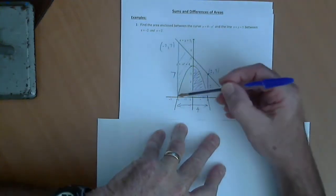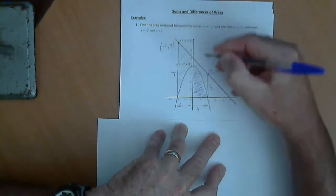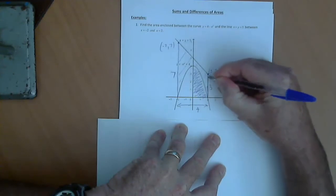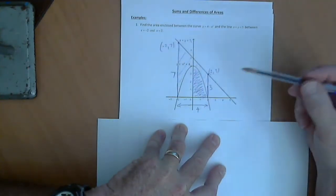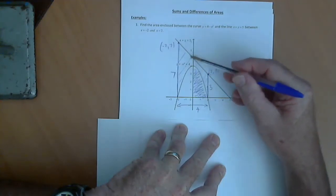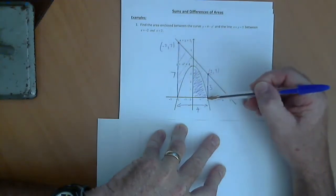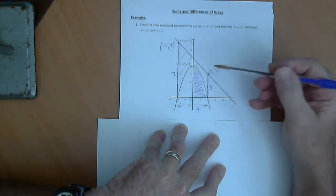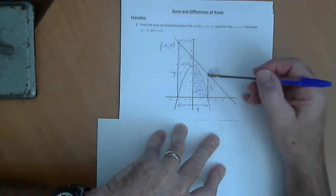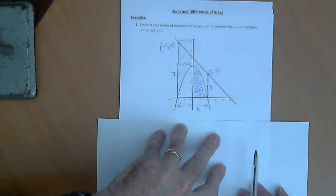And that will give us those two points there, which will allow us to know those heights. Okay, when we have a look at it, what we can see is we've got a trapezium around the outside. We've got a parabola underneath. So, in this case, we're going to do the area of the trapezium minus the area of the parabola.